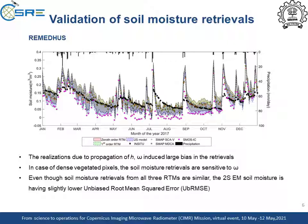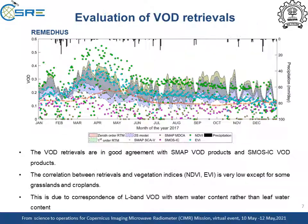The 2A submission model retrievals are slightly better than the other two models in most of the land cover types. The VOD retrievals are compared with SMAP-SAV, SMAP-MDCA, SMOS IC, and also the VOD retrievals are compared with vegetation indices, namely NDVI and EVI.